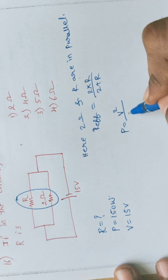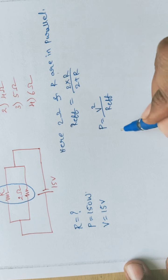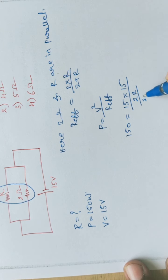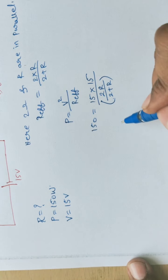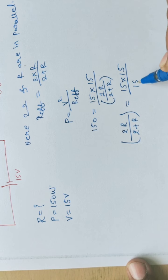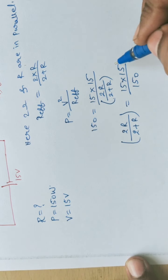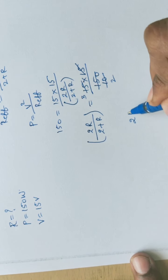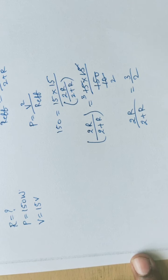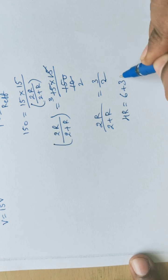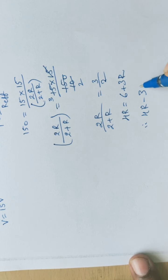Using P equals V squared by R effective: 150 equals 15 into 15 divided by (2R divided by 2 plus R). By cross multiplication, 2R divided by 2 plus R equals 225 divided by 150. Simplifying, 15 cancels 10 times giving 2R divided by 2 plus R equals 3 by 2.